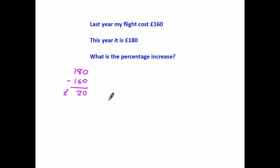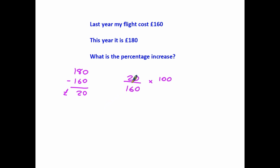Although we are working with percentages, the first thing we're going to do is express this increase as a fraction. We do that by taking the increase itself, which is £20, and putting it over the 160 — it has changed by 20 from the original 160. We are then going to turn the fraction into a decimal and then into a percentage. The calculation is: 20 divided by 160 — that is how we turn a fraction into a decimal — and then to convert it into a percentage we multiply by 100.